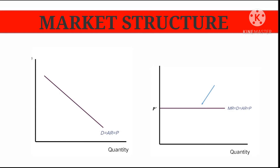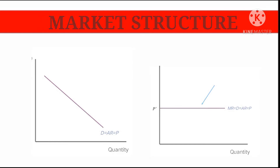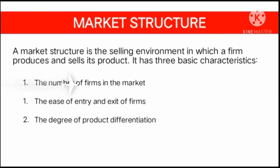Market structure is a term used by economists to group firms together based on their characteristics. You might ask the question: how is the tomato market different from the car market? We begin the discussion by defining the market structure. A market structure is the selling environment in which a firm produces and sells its product.